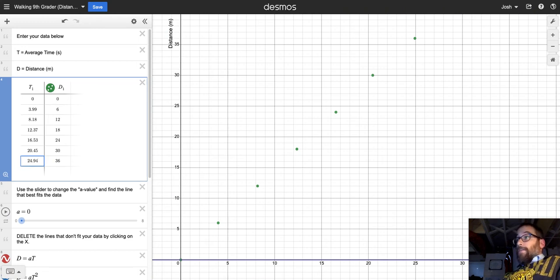Okay, so by entering that data into the table we've got our xy coordinates on our axes, and now we're going to use one of the coolest features of Desmos. We are going to add a line of best fit using what is called the A slider. So underneath the data table you can see here it says A equals zero.